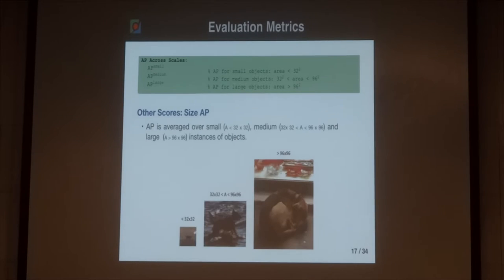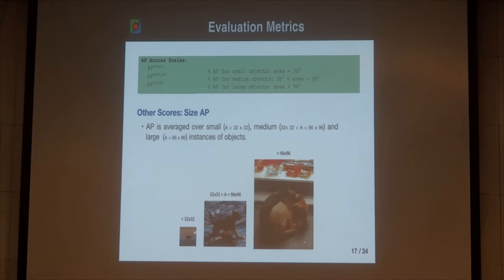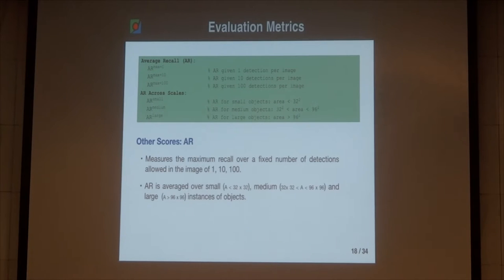We also scored the AP at different sizes of object instances. Smaller objects may be more difficult, especially in the COCO dataset where they may be more blurry or slightly obscured. So we have AP scores evaluated only on the smallest object instances, medium-sized instances, and large-sized instances. We also calculated average recall over different numbers of detections: 1, 10, and 100 detections, and over different sizes — small, medium, and large.